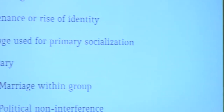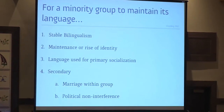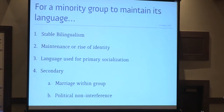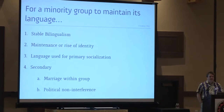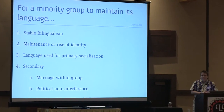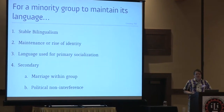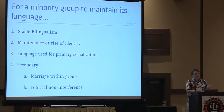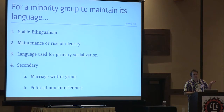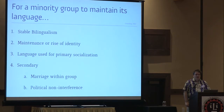Back in the 60s, a linguist called Greenberg came up with five things that a group needs to do to maintain its language in the long run. First, stable bilingualism: the monolingual speaker is no longer a going concern. People in minority language situations are going to be bilingual in the dominant outside language as well as the indigenous language. But that balance has to be maintained — you can't have the outside language growing and growing. That's unstable.